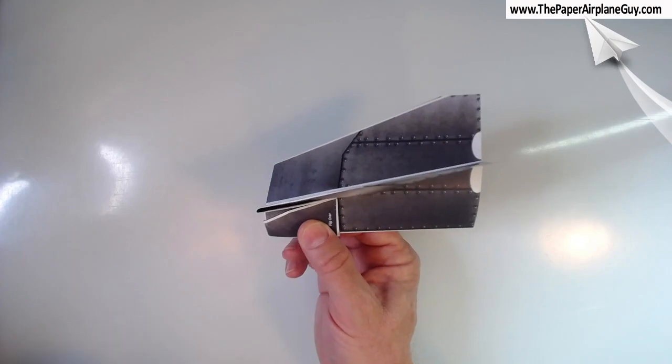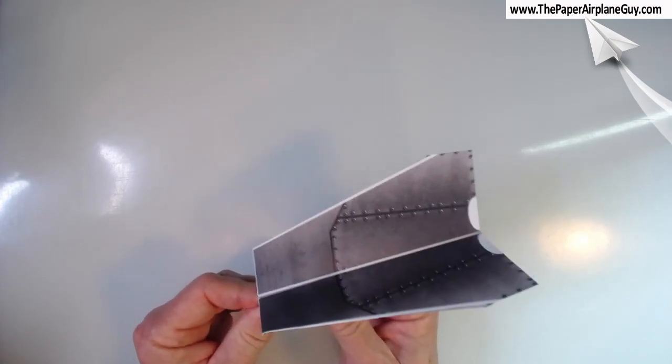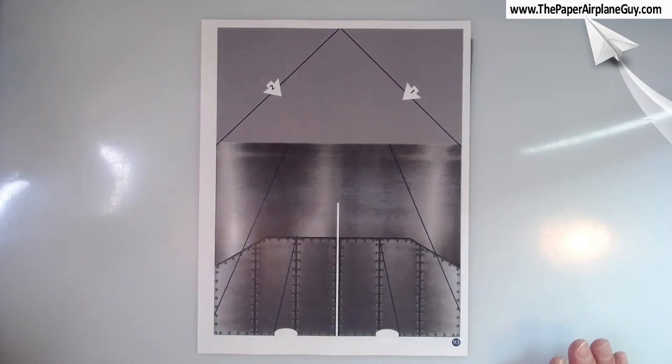And this plane is a real muscle plane. It's short, it's stubby, it's fast, it's tough. It is quite an aircraft. And I'm going to show you how to make this guy using this page in the book.